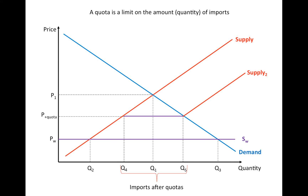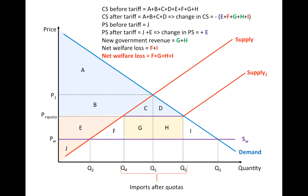We can represent the net welfare loss in this diagram as before, but there is a big difference. G and H was the government revenue from the tariff; however, a quota does not raise any government revenue because it is not a tax. Therefore G and H are also lost, and the net welfare loss for society is much bigger than before — comprising not just the triangles F and I but also what the government is no longer earning.